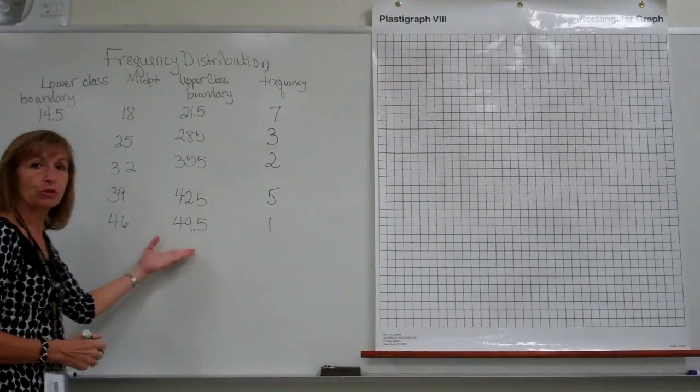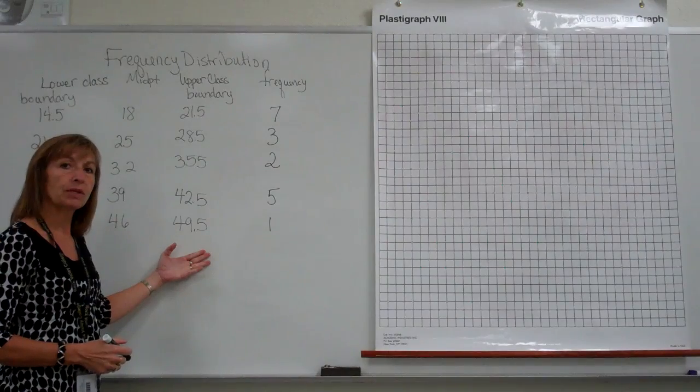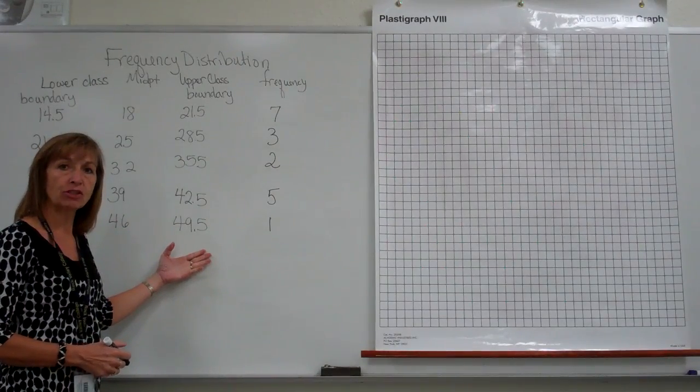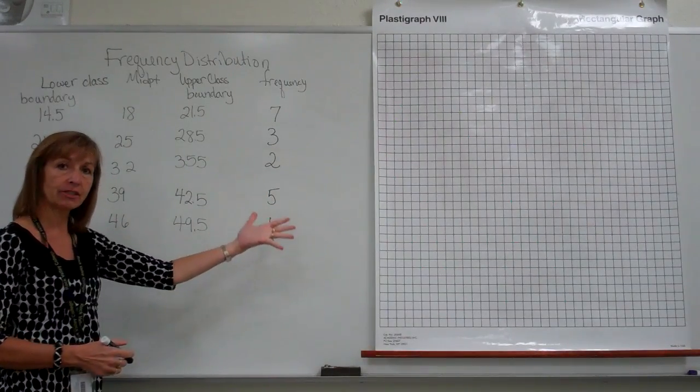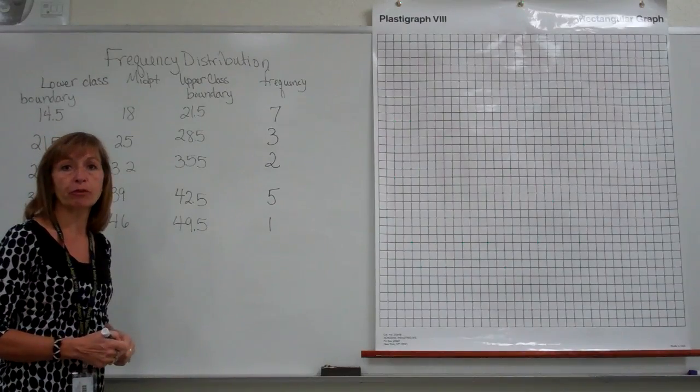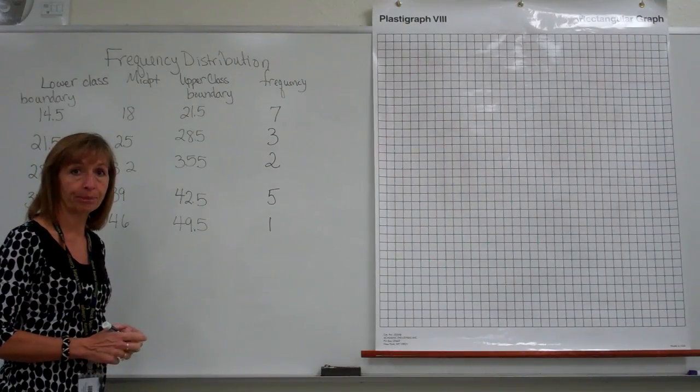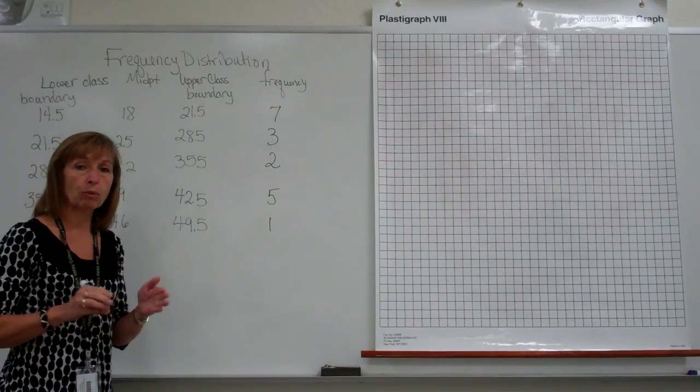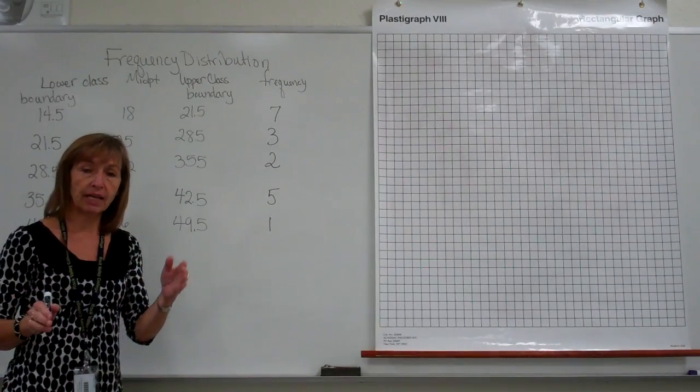Once we have our frequency distribution table, one of the things that we can do in terms of getting the information off of the table and onto a graph is to use this information to draw a histogram. Now with a histogram, we want the bars to be equally width and they need to touch.